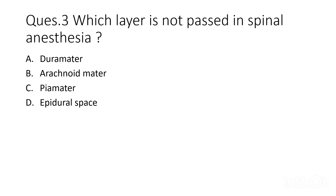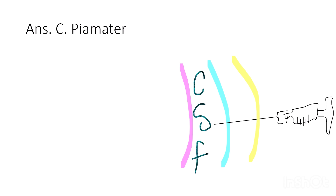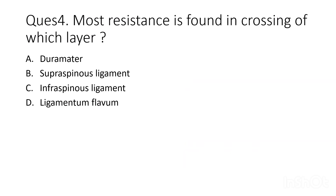Third question: which layer is not passed in spinal anesthesia? Options are dura mater, arachnoid mater, pia mater, or epidural space. The correct answer is C — pia mater.